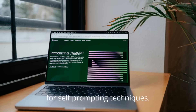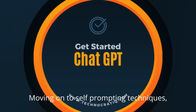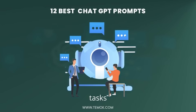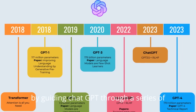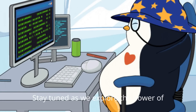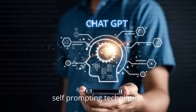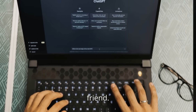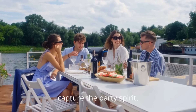4. Self-Prompting Techniques. We will show you how to prompt ChatGPT to optimize its own prompts for specific tasks. By guiding ChatGPT through a series of questions and responses, you can tailor the generated content to meet your desired outcomes. Example: 'ChatGPT, I'm planning a surprise party for a friend. Can you help me generate five creative invitation messages that build excitement and anticipation? Consider different tones and styles to capture the party spirit.'